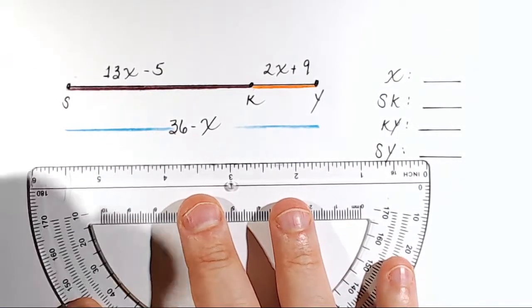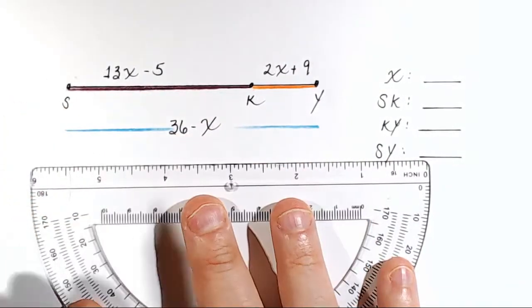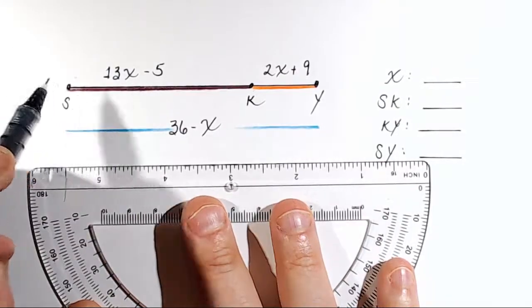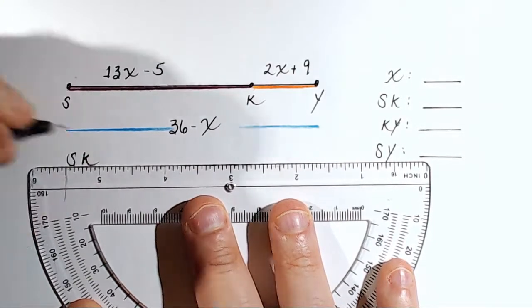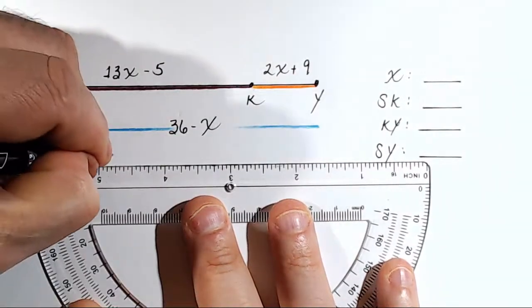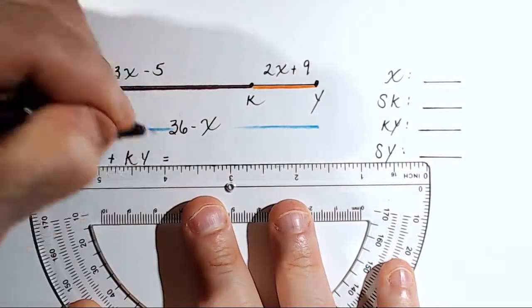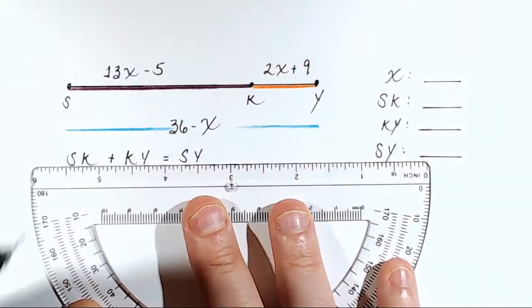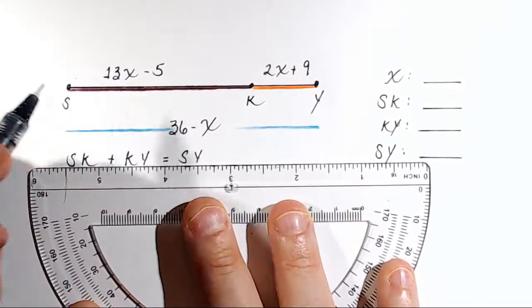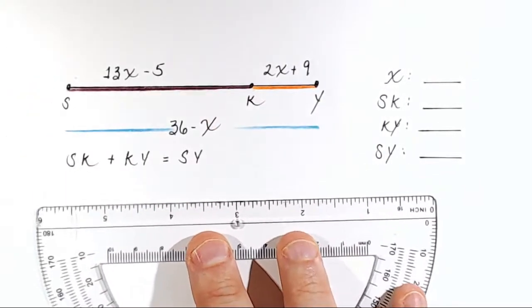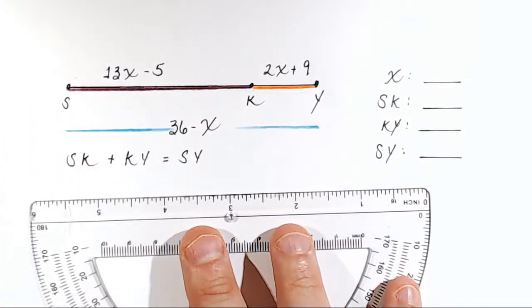All right, so what we're going to do is make a claim using a geometric sentence. Here's the claim we're going to make: the distance from S to K plus the distance from K to Y is equal to the total distance from S all the way to Y. So SK plus KY equals SY. Now we just substitute in the algebraic expressions we're given for all these things and solve for X. No biggie.